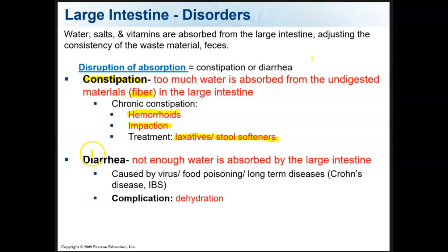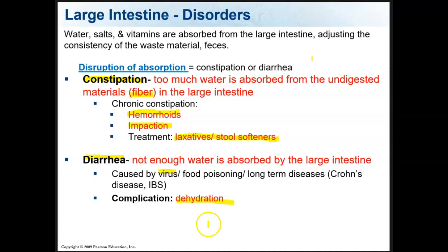Diarrhea is the other end of the spectrum — it occurs when not enough water is absorbed by the large intestine. This can be caused by food poisoning, a viral condition like stomach flu, or by Crohn's disease or irritable bowel syndrome. A complication of chronic diarrhea is dehydration.